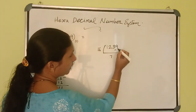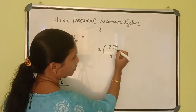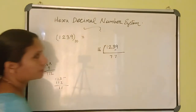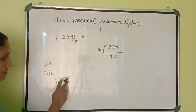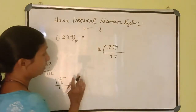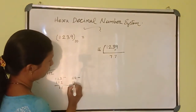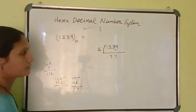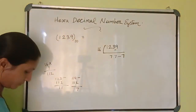That 11 you can write here as the remainder. Then, bringing down gives you 119. Again, it will go 7 times. 16 into 7 gives 112. Then, 119 minus 112 gives you 7 as the remainder. 7 is the remainder. That you can write here.